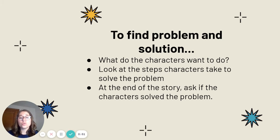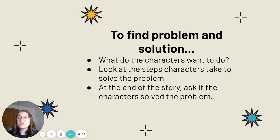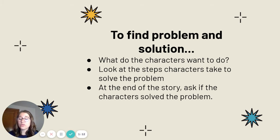To find the problem and the solution, we will look at what the characters want to do. Is there something they're trying to do? We would look at the steps characters take to solve the problem. So once they have something they want to do — maybe they spilled the milk — what are they doing to solve that problem? Are they going to the store to get paper towels? Are they asking their mom and dad for help? Those are the steps the characters take to solve it. And at the end of the story, ask if the character solved the problem.